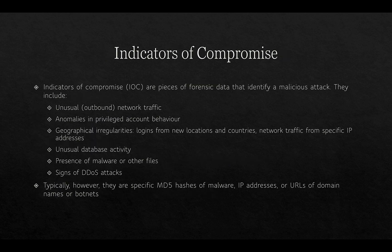Indicators of compromise are pieces of forensic data that identify a malicious attack. They include unusual — outbound usually, but not necessarily always — network traffic. Data exfiltration, for example, can lead to surges of traffic leaving the network.